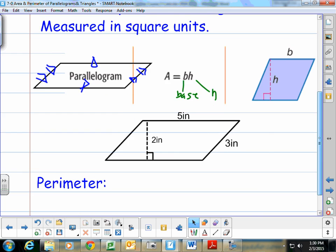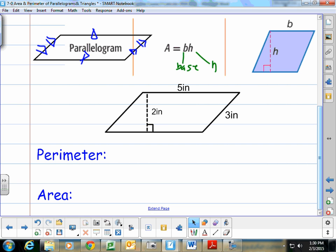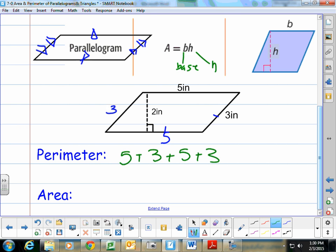Let's do an example. To find the perimeter of this figure, we add all the sides together. If this side's 5 inches, and they're congruent, this side's also 5. This side's 3, and this side's also 3. Our perimeter is 5 + 3 + 5 + 3. That's 10 and 6, for a total of 16 inches around.